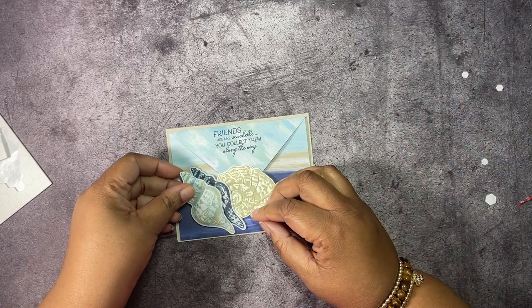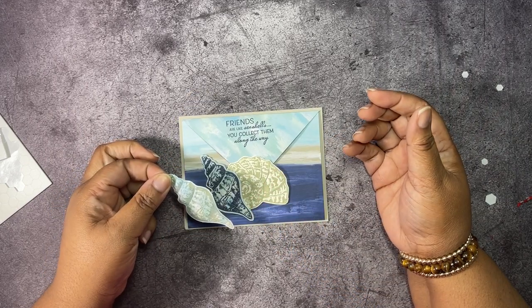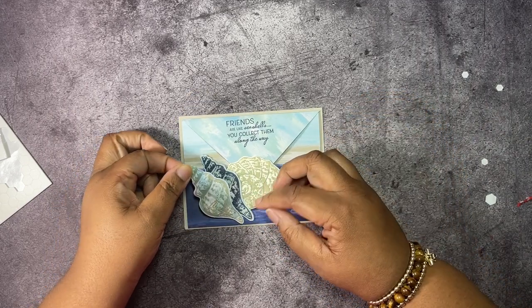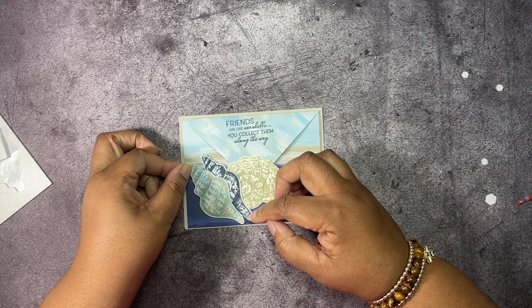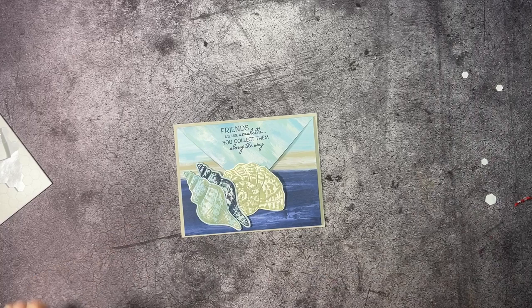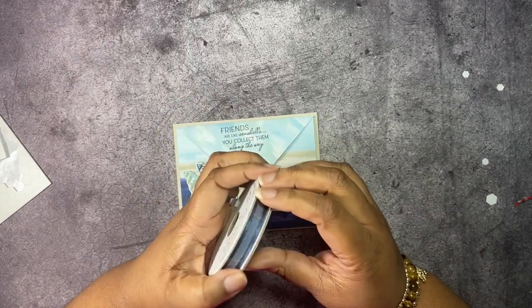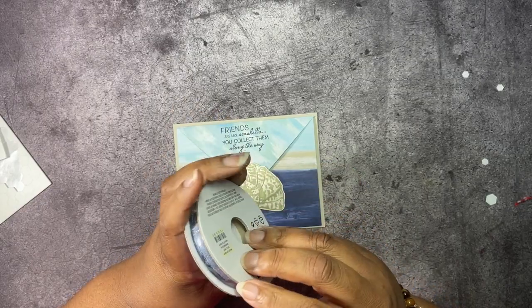We're just going to put this... oh my gosh, I forgot to put, I wanted to use some ribbon under here. I forgot. Let me see if I can still do it. Where did I put the ribbon? I have some of the Night of Navy bordered ribbon.